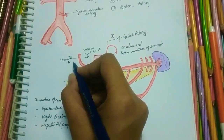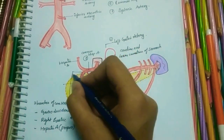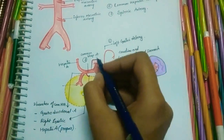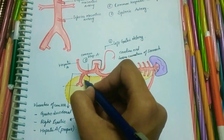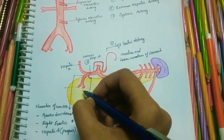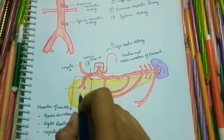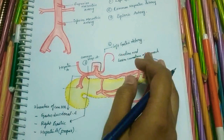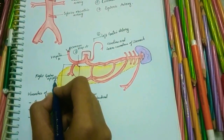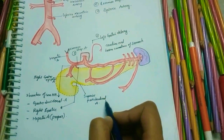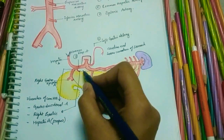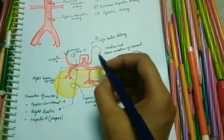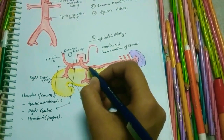The gastroduodenal artery arises from the upper border of the first part of the duodenum. It runs downwards behind the duodenum and terminates at the lower border by dividing into the right gastroepiploic artery and the superior pancreaticoduodenal artery. The right gastric artery arises distal to the origin of the gastroduodenal artery and turns towards the left, running upwards along the lesser curvature of the stomach.